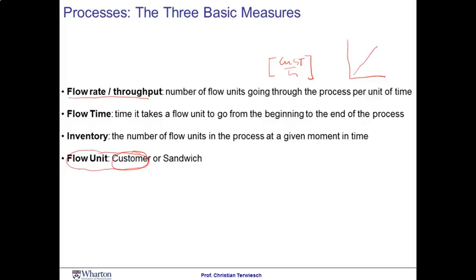Second, we define the flow time as the time it takes a flow unit to go through the process. This corresponds to the horizontal difference between the inflow line and the outflow line. And third, we define the inventory as the number of flow units in the process at any given moment of time — the vertical distance between the two lines.